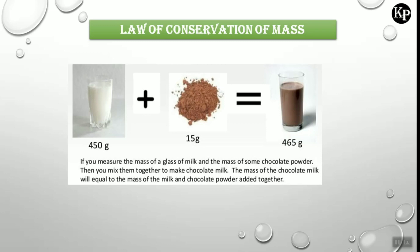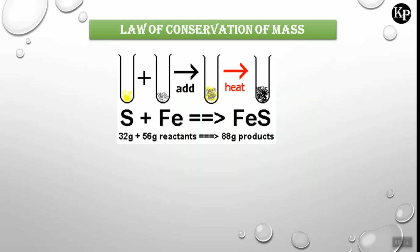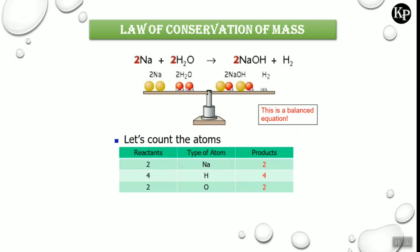Another example: sulfur 32 grams plus iron 56 grams — these are the two reactants. After the reaction, the product is 88 grams. So the total reactant mass equals the total product mass.